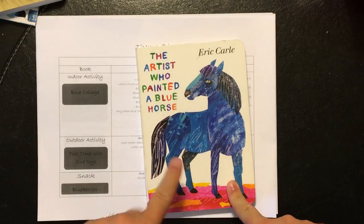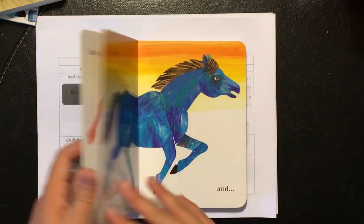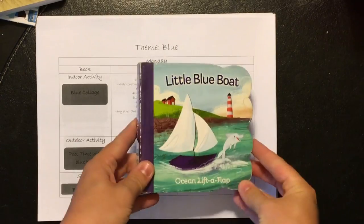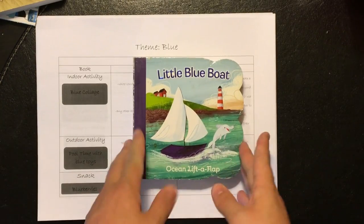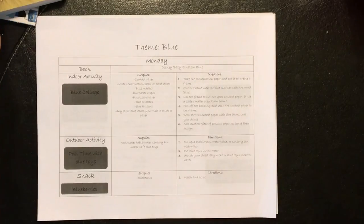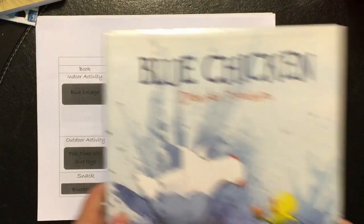And Eric Carle, the artist who painted a blue horse. And The Little Blue Boat for Thursday, and this is a lift-up lap book. And then Friday is the blue chicken.